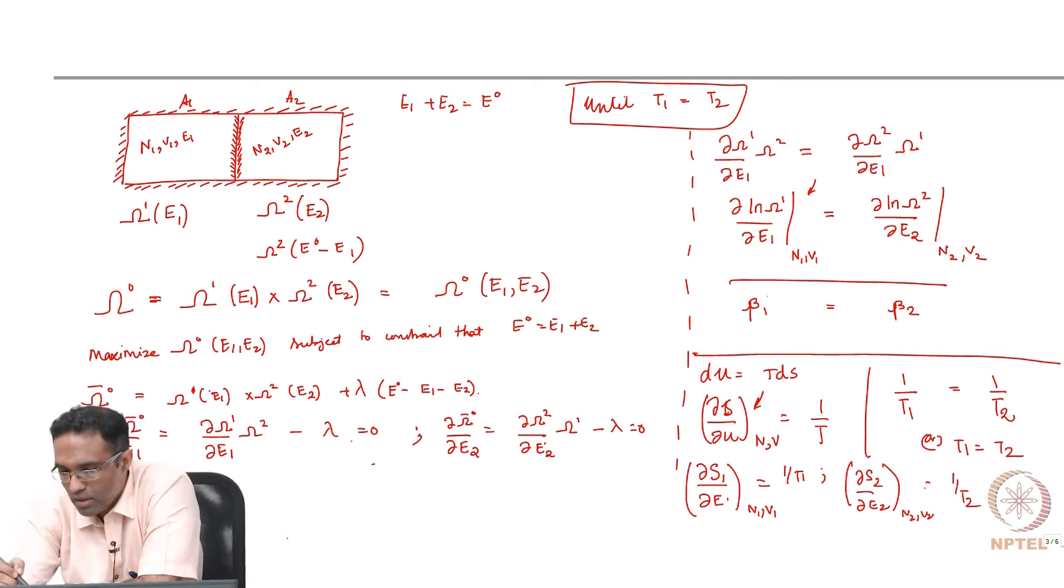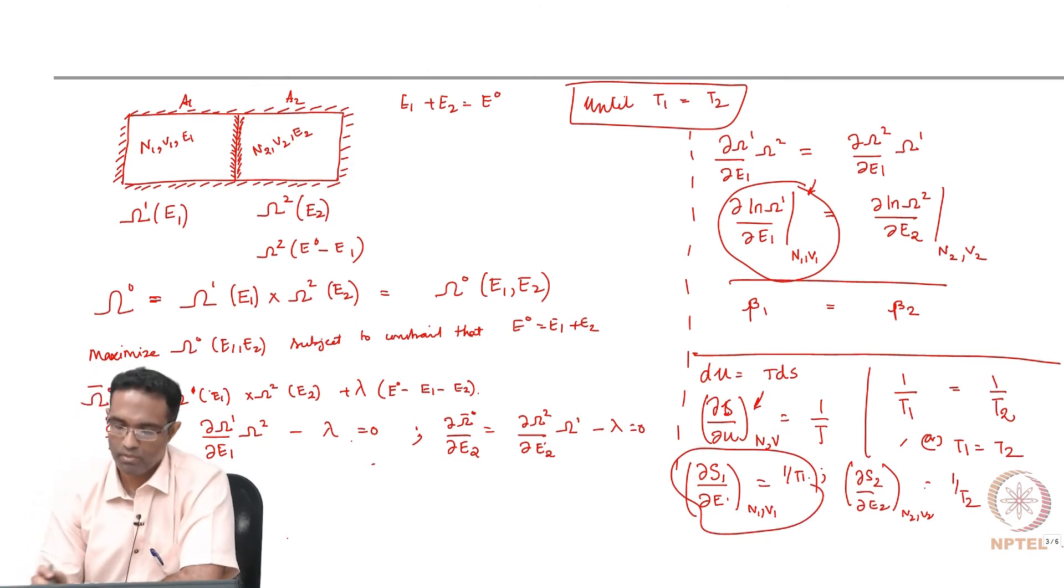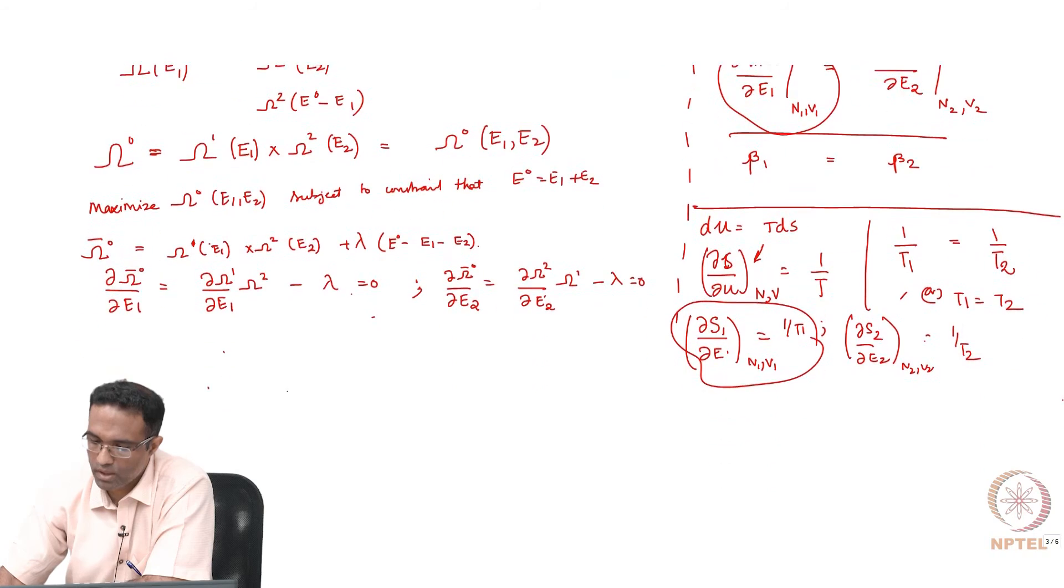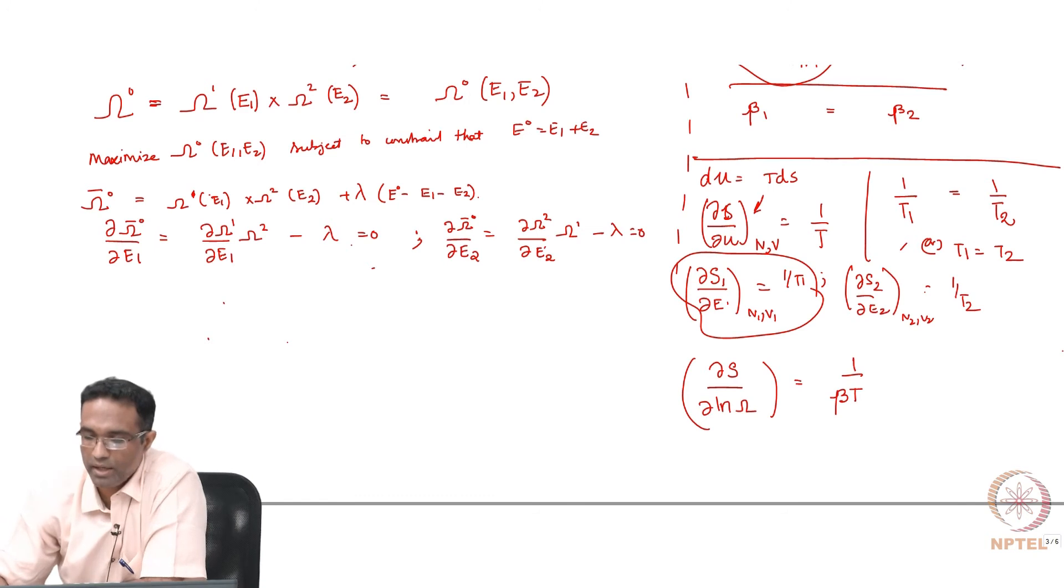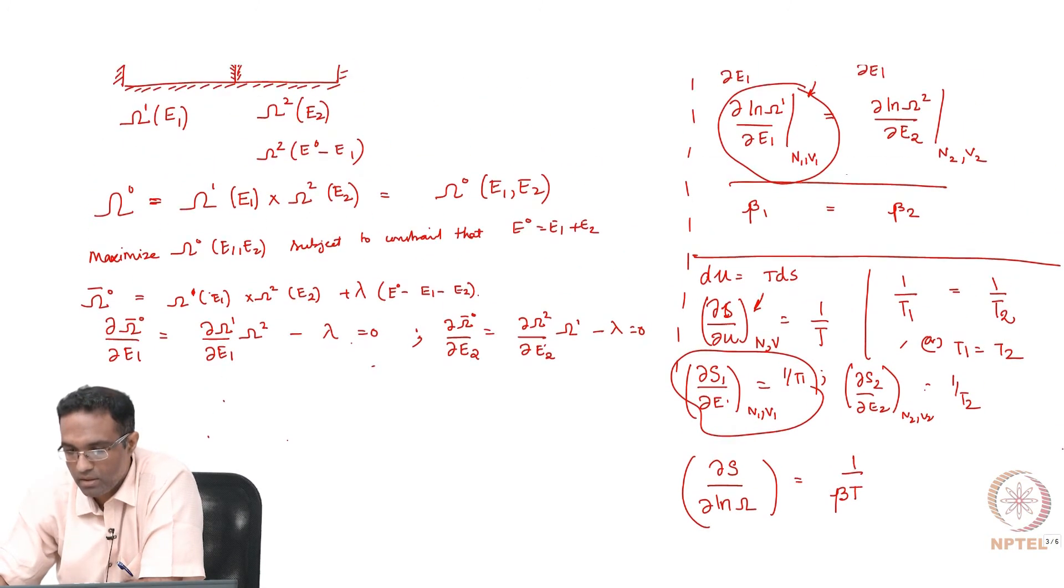Therefore, from this expression and this expression, we are kind of tempted to write the following: dou s by dou ln omega is equal to 1 divided by beta t by looking at this expression right here.